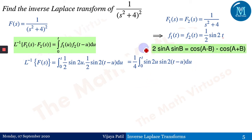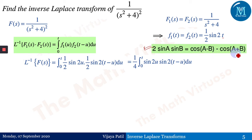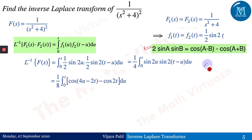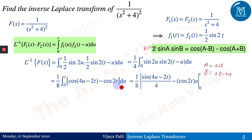We use the identity 2sin(A)sin(B) = cos(A−B) − cos(A+B), so sin(A)sin(B) = [cos(A−B) − cos(A+B)]/2. With A = 2u and B = 2t−2u, this gives (1/4)·(1/2)∫₀ᵗ [cos(4u−2t) − cos(2t)] du = (1/8)∫₀ᵗ [cos(4u−2t) − cos(2t)] du.